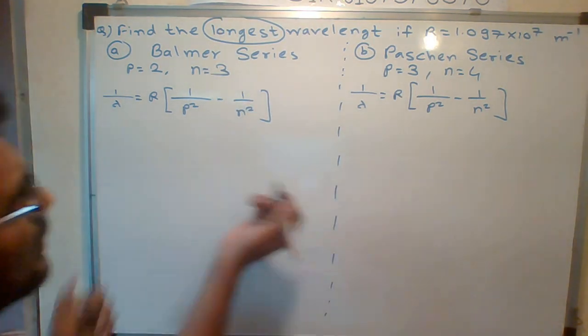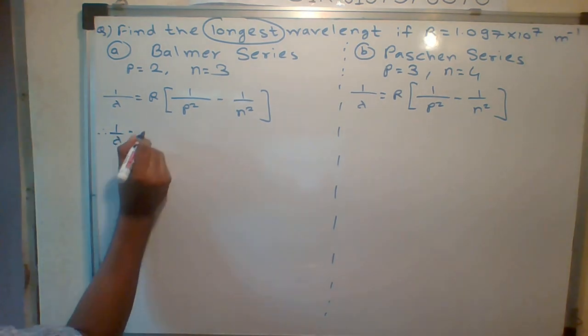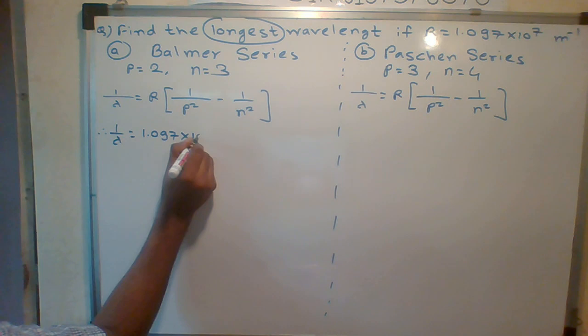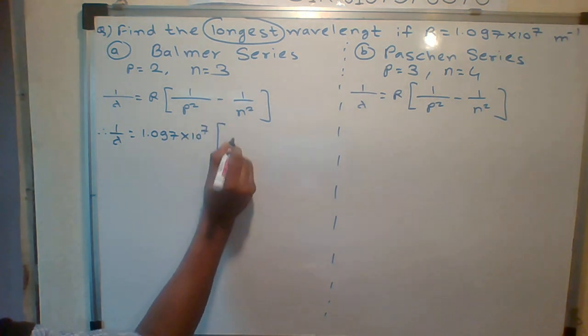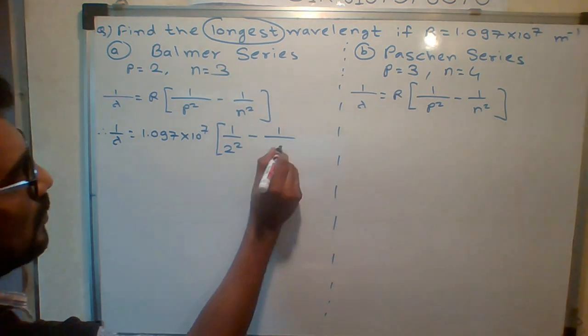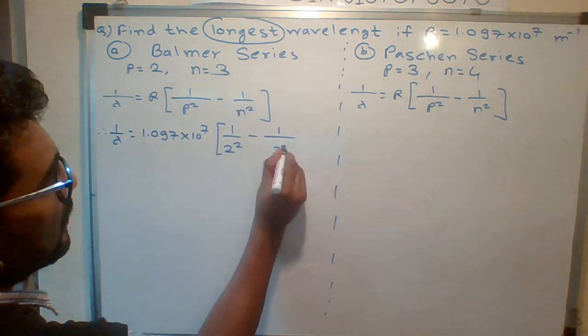Now I will put the values and find out the answer. R value is 1.097×10⁷. So the answer is 1/2² minus 1/3². Now let me simplify.